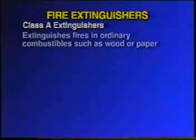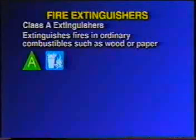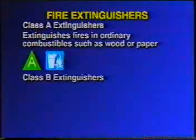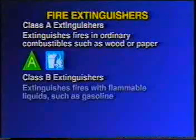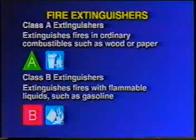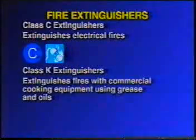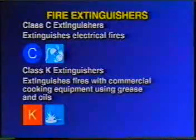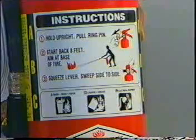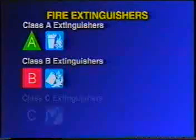Class A extinguishers: used for fires from ordinary combustibles such as wood or paper. Class B extinguishers: used to extinguish fires from flammable liquids such as gasoline. Class C extinguishers: used to extinguish electrical fires. Class K extinguishers: used in commercial kitchen areas to extinguish grease and oil fires. Most fire extinguishers in general areas of healthcare facilities have multi-class ratings — classified to extinguish fires belonging to the categories of A, B, and C. However, staff members are responsible to know which type of fire extinguishers are available for use in their area of responsibility.